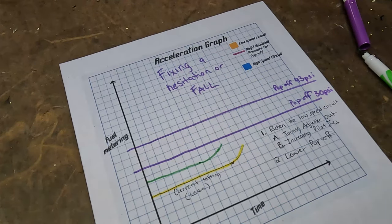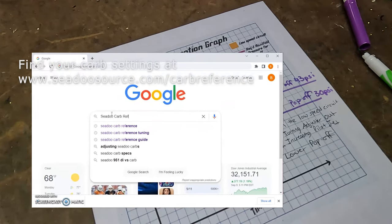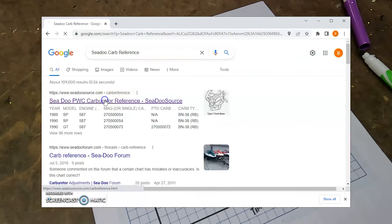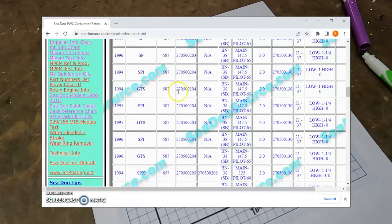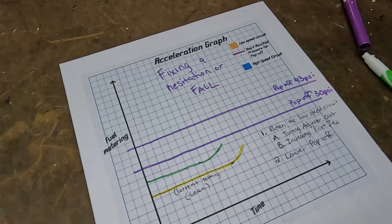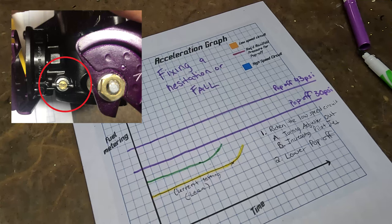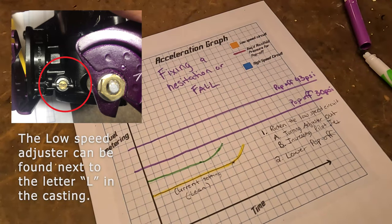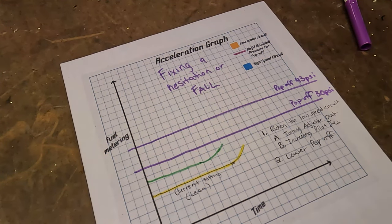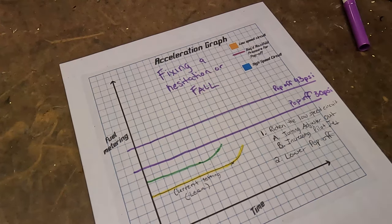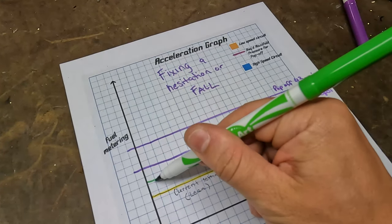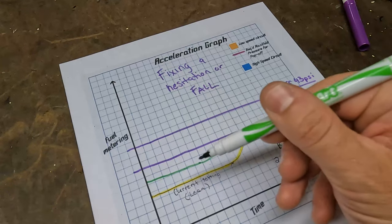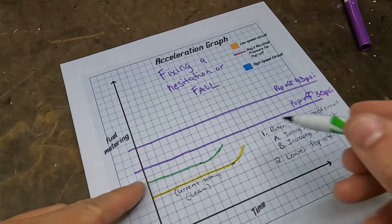Before we attempt to fix a hesitation or fall, first thing you want to do is make sure your low and high speed screws are set at the manufacturer's recommendation. The manufacturer is the one that tested this over and over again, so they know what it should be set at. The first two things you can do is you can either turn the low speed adjuster out to rich in the circuit, or you can take the carbs off and increase the pilot jet size so that we can get closer to pop-off manifold pressure. This green line indicates when we do that, we're adding more fuel to the low end circuit at idle and we're getting closer to pop-off.